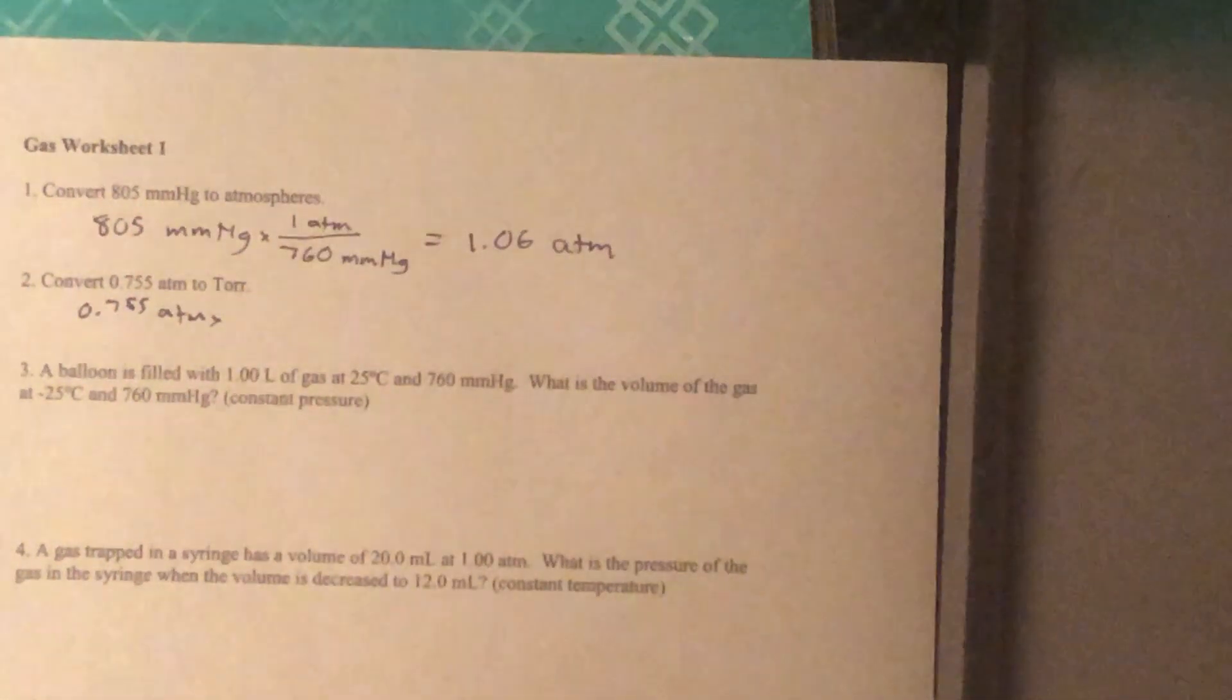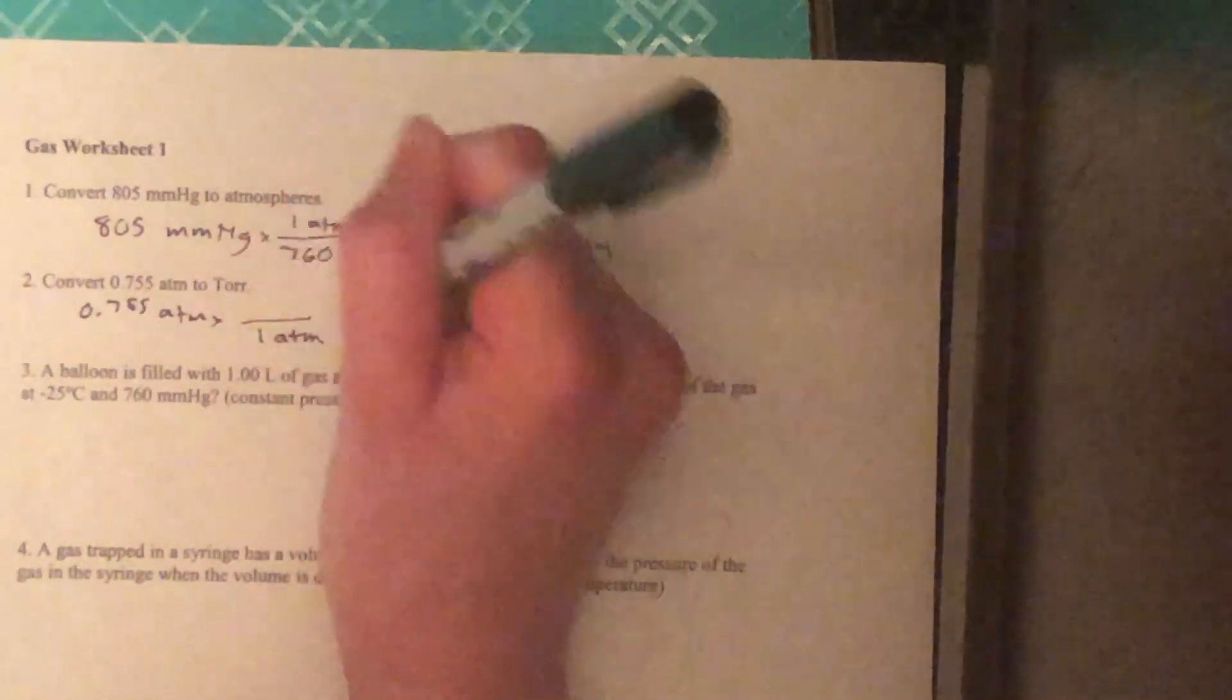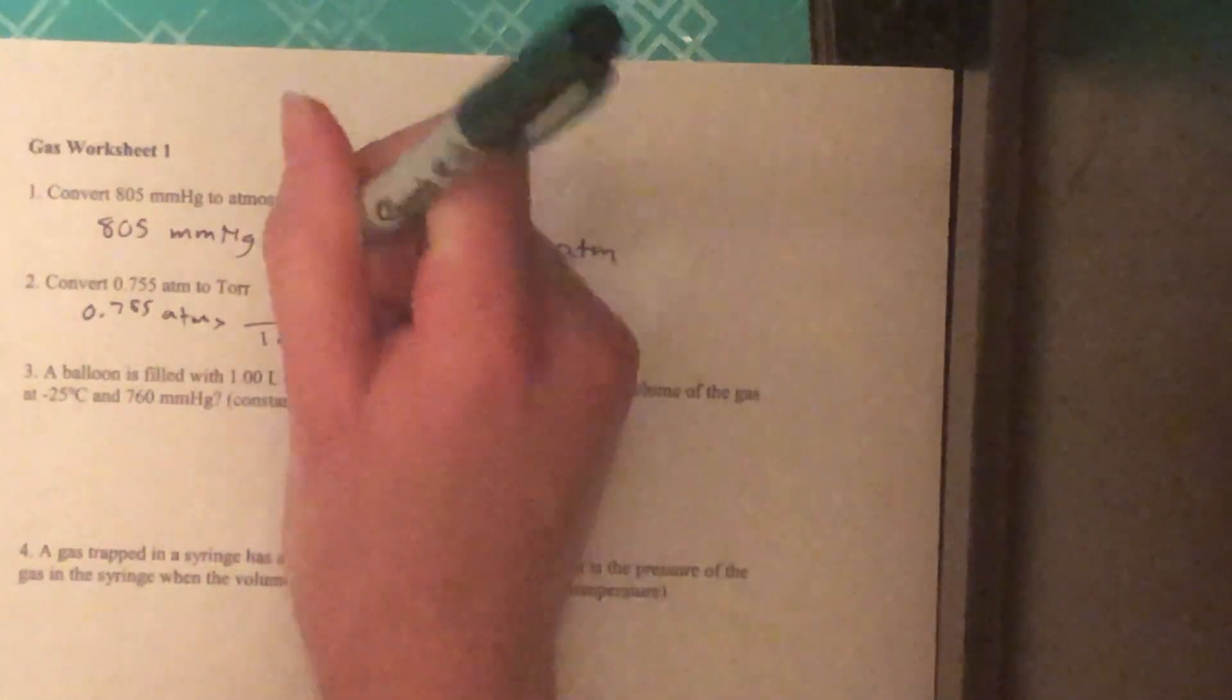And again, we'll set up our dimensional analysis so that our units cancel. We know that one atmosphere is 760 torr. So we want our atmospheres on the bottom this time so that our units cancel.